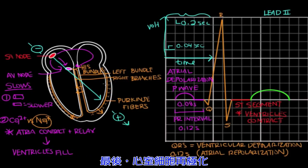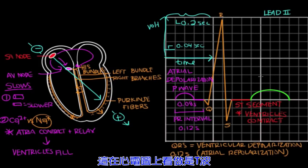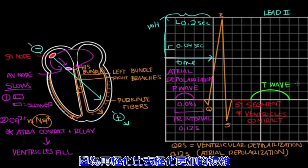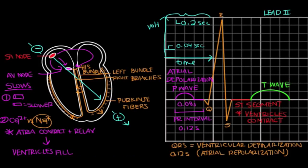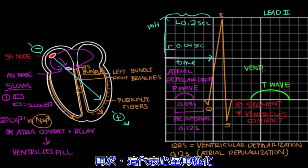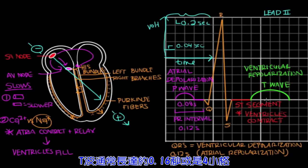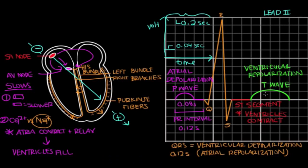Finally, the ventricular cells repolarize and this is seen as the T wave on EKG. The T wave is flatter and longer than the QRS complex because repolarization is a slower process than depolarization. And again, this represents ventricular repolarization. The T wave typically takes up about four boxes or 0.16 seconds.